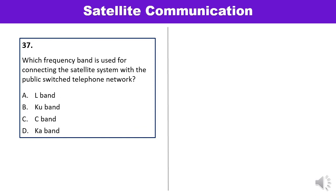Question 37: Which frequency band is used for connecting a satellite system with the public switched telephone network (PSTN)? The KA band is used for PSTN services where a satellite system is connected. Answer D is correct.